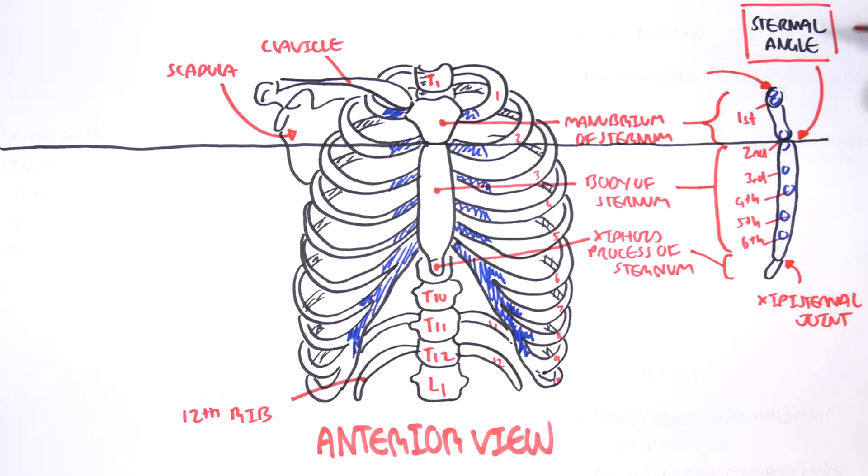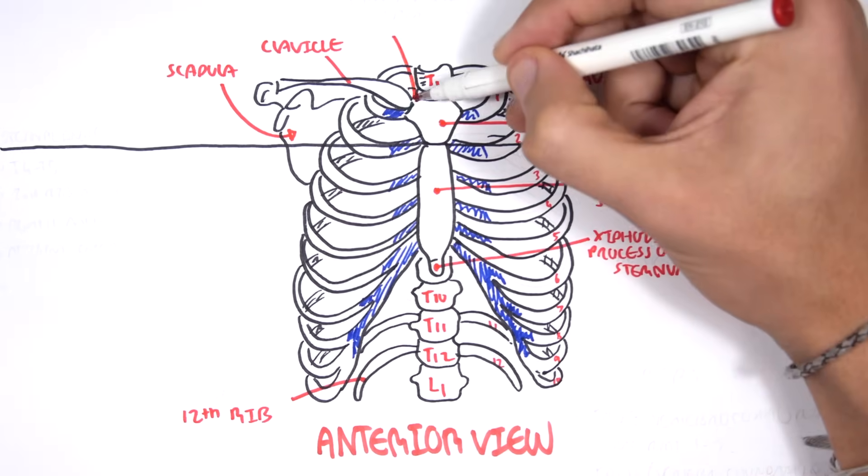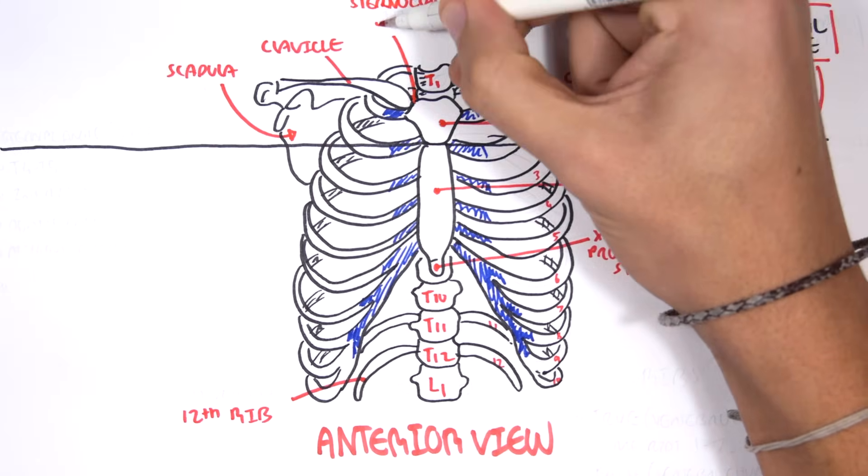And on top here is the clavicular notch, where the clavicle attaches. The clavicle and sternum make up the sternoclavicular joint.